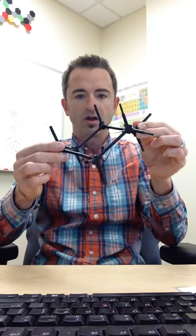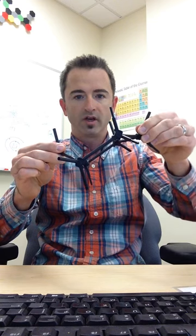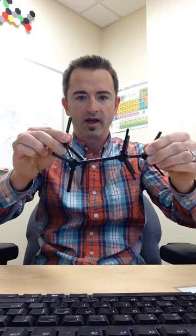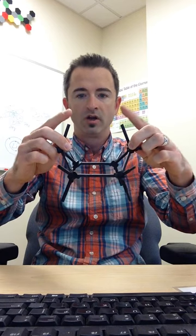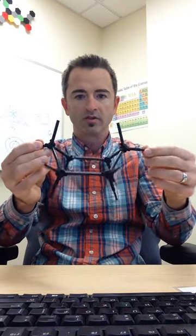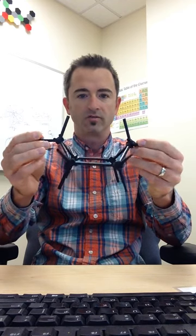Then we're going to walk it through the boat conformation. So I'm going to pull it up on one side into the half chair and that's where the ring is flat and only one carbon is angled up. Then I'm going to move it right on up into the boat conformation and you're going to see the proximity of these two hydrogens are actually quite close to one another. And because of space and where these reside, this is a higher energy conformer. Cyclohexane does not like to exist in this conformation.